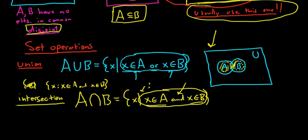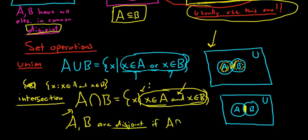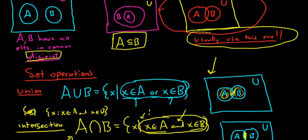Looking at the Venn diagram for intersection: here's our universal set, here's A, and here's B. The intersection is what they have in common — that little overlap region, which I'll shade in yellow. If A and B have nothing in common, that means this set should be empty, and we say that A and B are disjoint. A intersection B equals the empty set. In that case, the first picture with no overlap would actually be a better picture to use, because you can clearly see they're disjoint — there's no overlap.